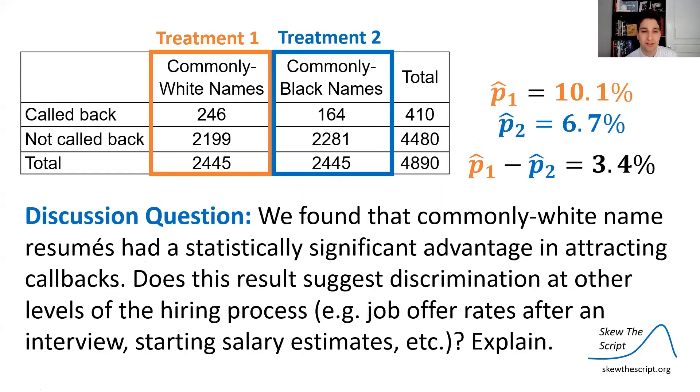So now let's go to our discussion question for today. We found that commonly white name resumes have a statistically significant advantage in attracting callbacks. Does this result suggest discrimination at other levels of the hiring process, i.e., say, for example, job offer rates after an interview, because this is a callback for a resume, not an interview, or does it also apply to starting salary estimates that have been given to people who were just hired for a job, etc. Explain what you think.